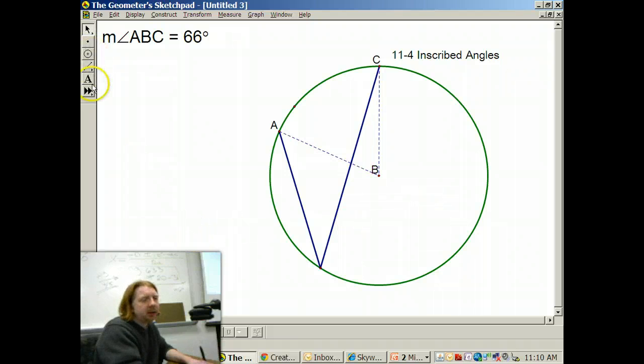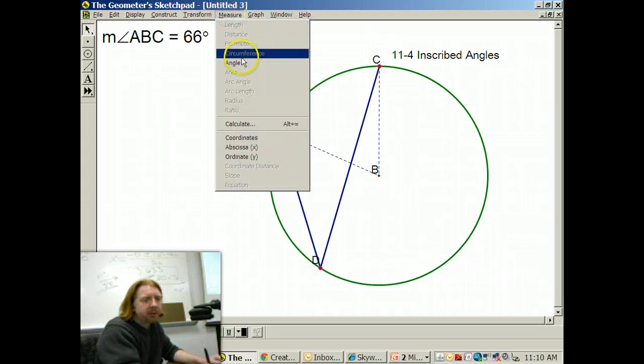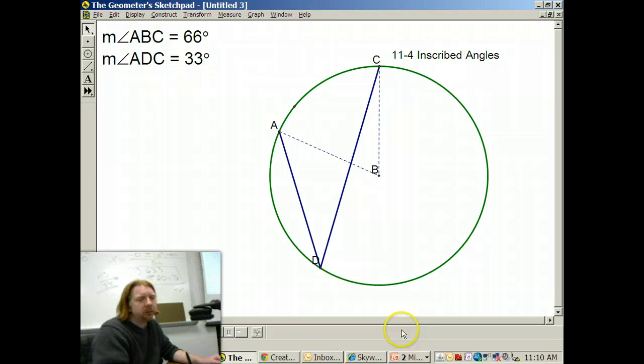So now the angle that I'm looking at here, that's the angle ADC. That's what's called an inscribed angle. So let's go ahead and measure that guy. And we're going to be comparing these measurements. Measure the angle. Huh. Well, that's weird. 33 degrees.